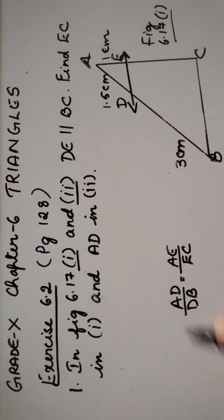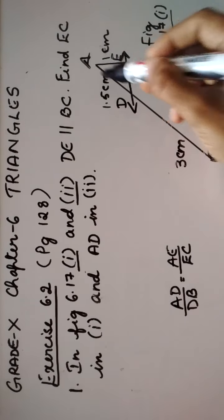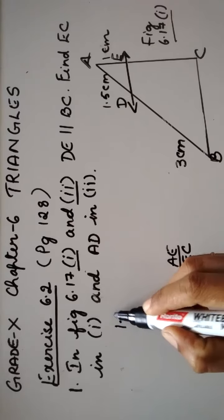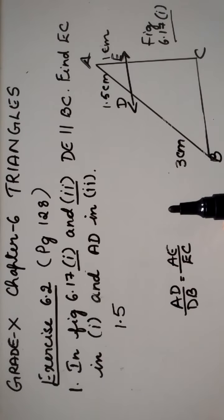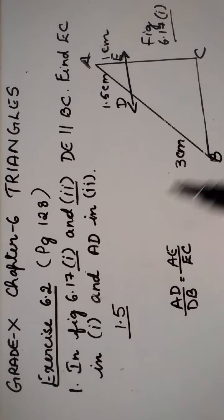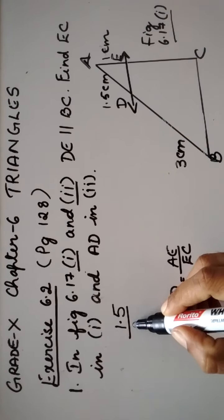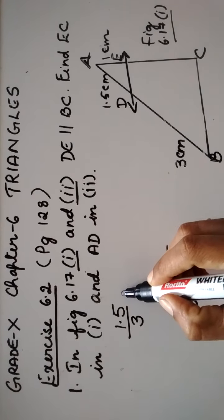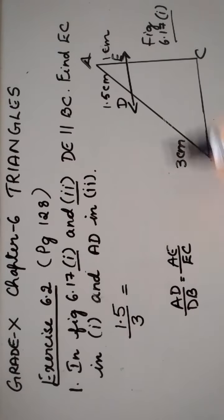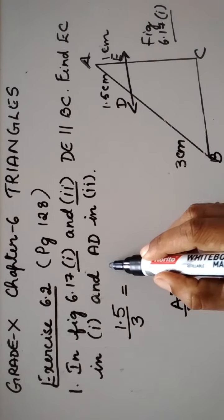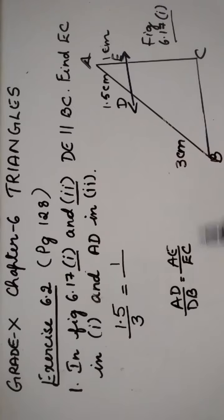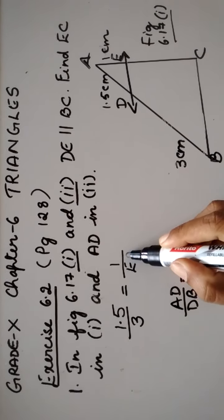What is the value of AD? It is 1.5 divided by what is the value of DB? It is 3, which is equal to what is the value of AE? It is 1 divided by we need to find EC.